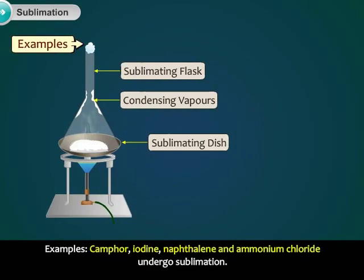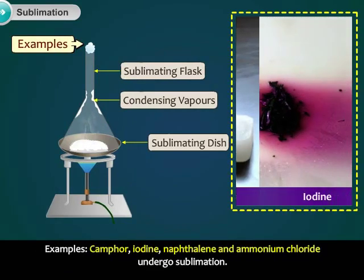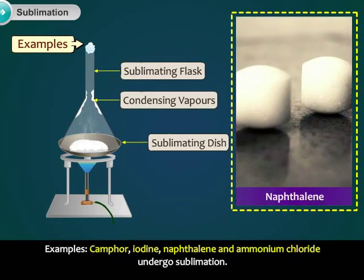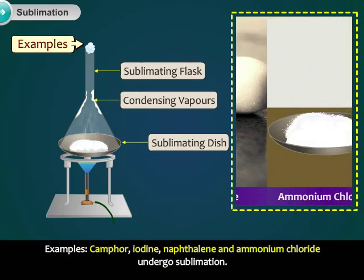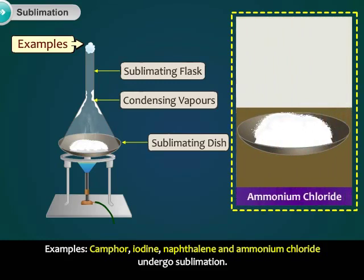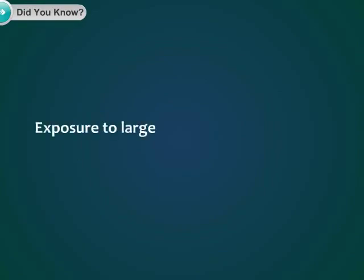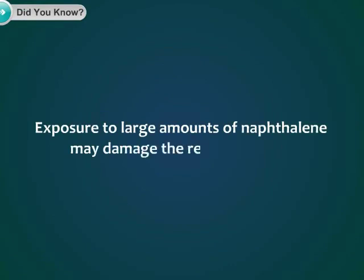Examples: Camphor, iodine, naphthalene, and ammonium chloride undergo sublimation. Did you know? Exposure to large amounts of naphthalene may damage the red blood cells.